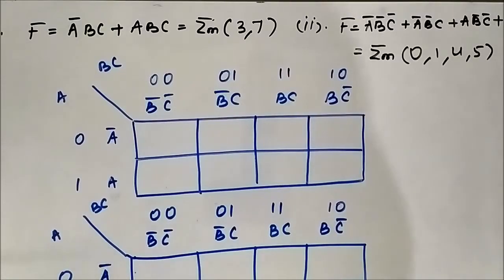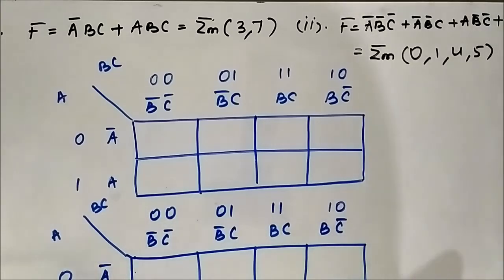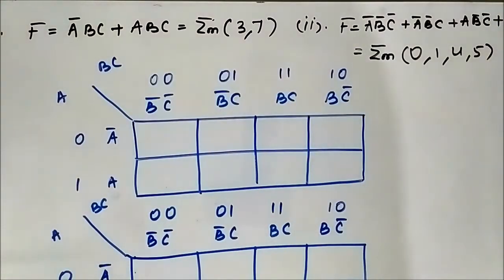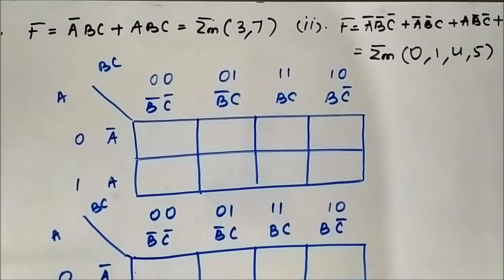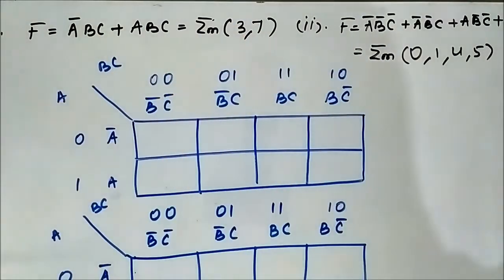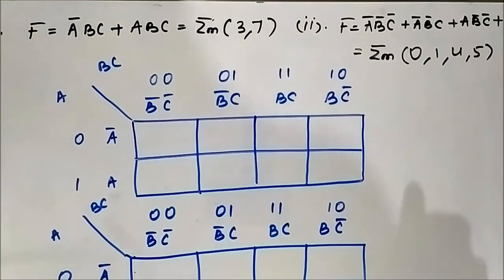We have mapped two-variable SOP expressions into KMAP. Now we will be doing the same for three-variable expressions. There are three variables in each expression: A, B, C, and they are all SOP type expressions — sum of products. So we will be using a three-variable SOP KMAP.